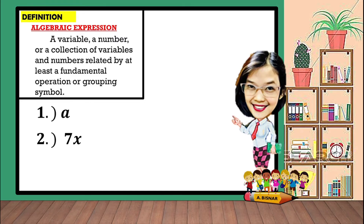7x can also be read as the product of 7 and x, which means that there is one fundamental operation in here and that is multiplication, because it is read as the product of 7 and x.